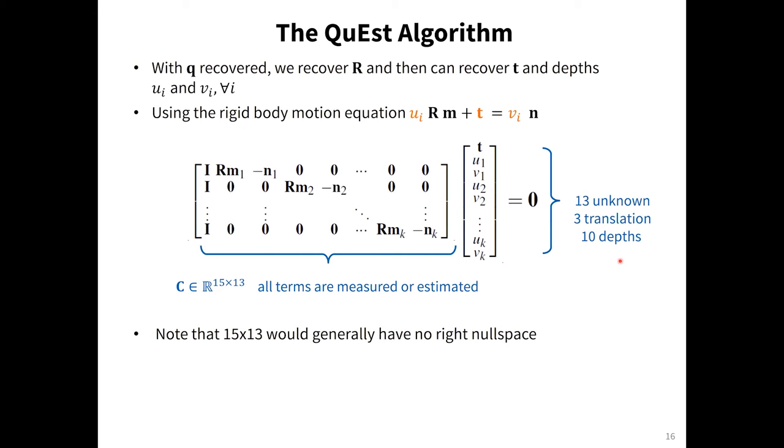Once we have solved this set of equations for W, X, Y, and Z, we can use that to recover the rotation matrix. Then we can look back at our rigid body motion equation where now we can see that we can add R to our set of known terms. So recovering U, T, and the depths can now be done through solving a set of linear equations. We can solve this and we get the three translation terms and the ten depth terms, the depths of the points in both camera views. We will note that this matrix is not square, it's generally not going to have a right null space, so you end up just finding the singular vector corresponding to the smallest singular value.